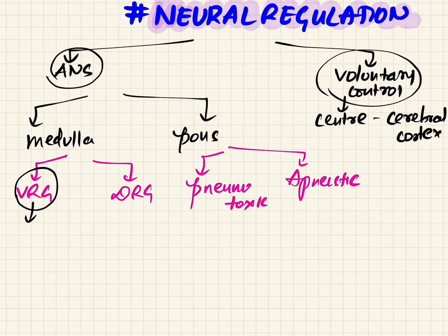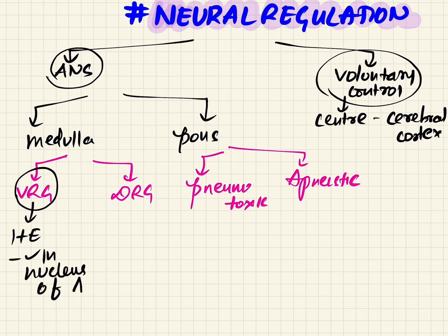The ventral respiratory group is present on the ventral lateral aspect of the medulla oblongata. It has both I neurons and E neurons — I neurons promote inspiration and E neurons promote expiration. Because it has both types, VRG helps with both inspiration and expiration. It is present in the nucleus ambiguus and is extended along the length of the medulla.